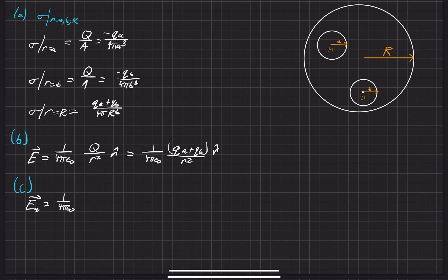So inside of that spherical cavity, the electric field is equal to just like the point charge, as if the point charge was QA, and it goes radially outwards into R squared.